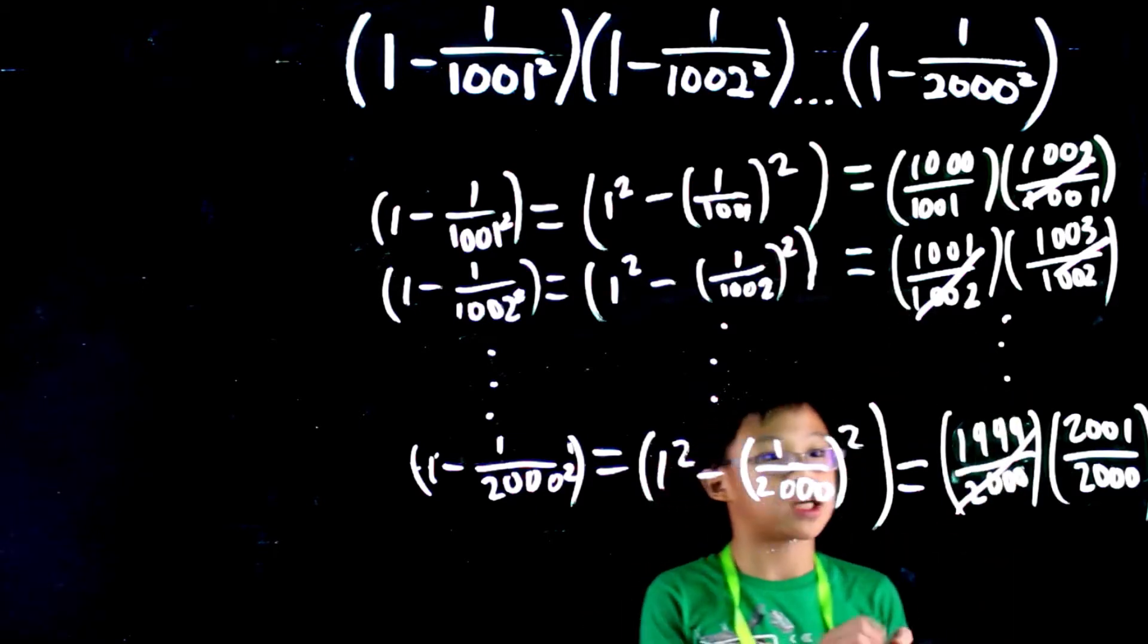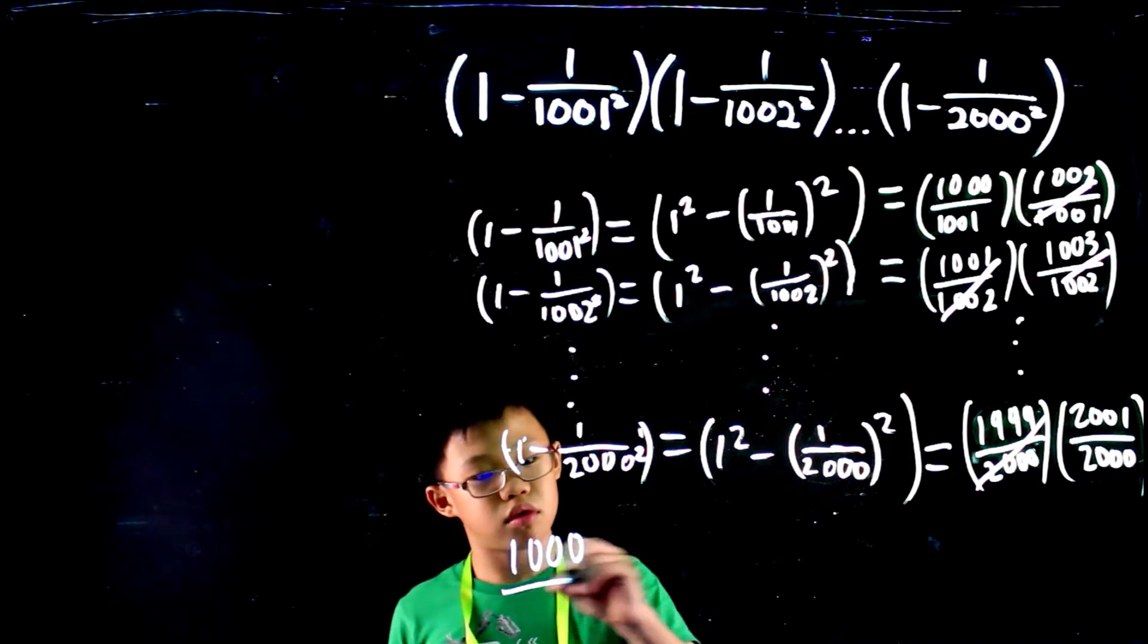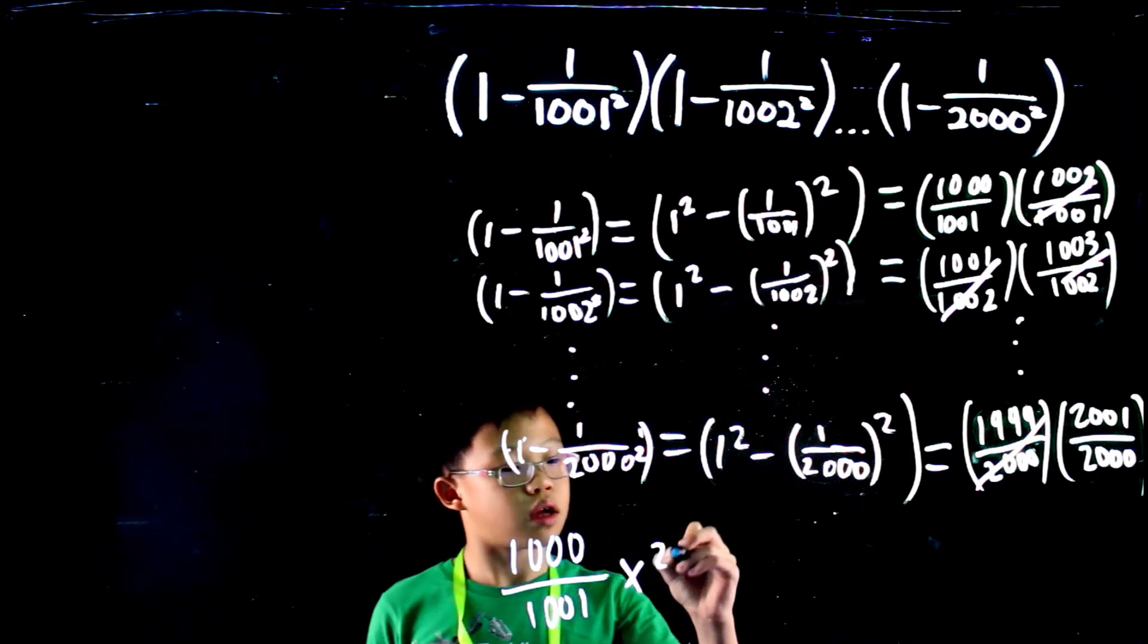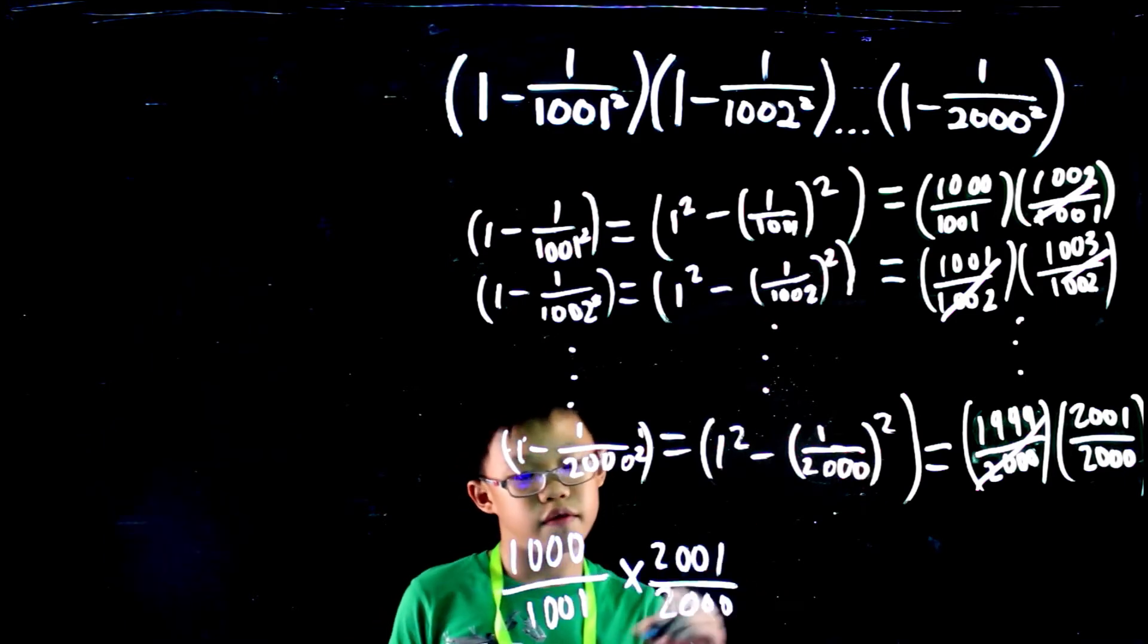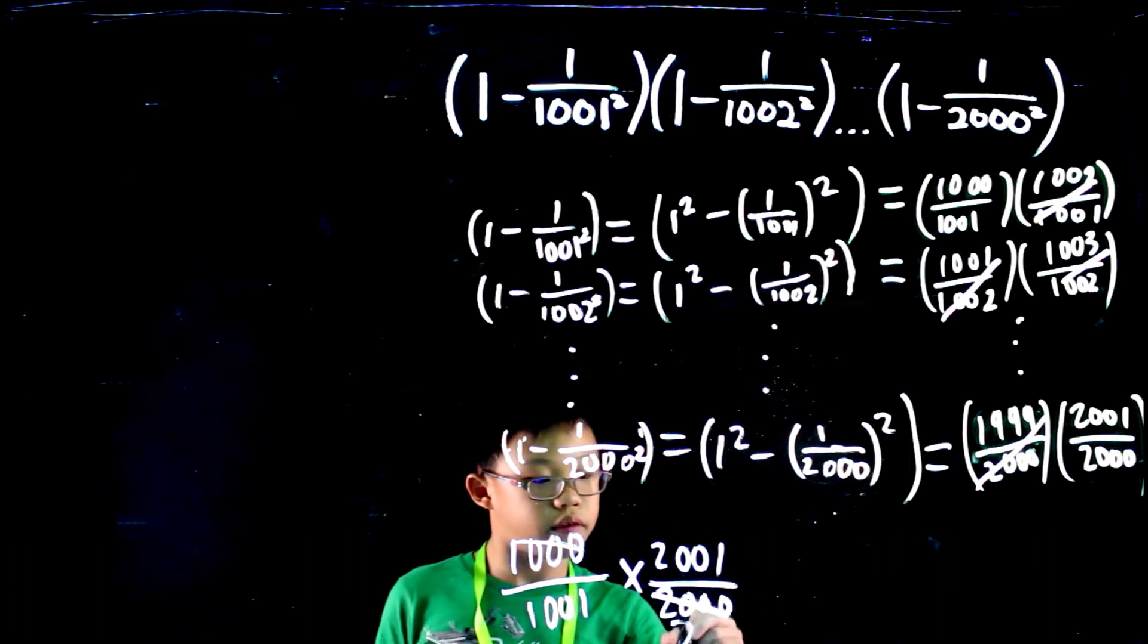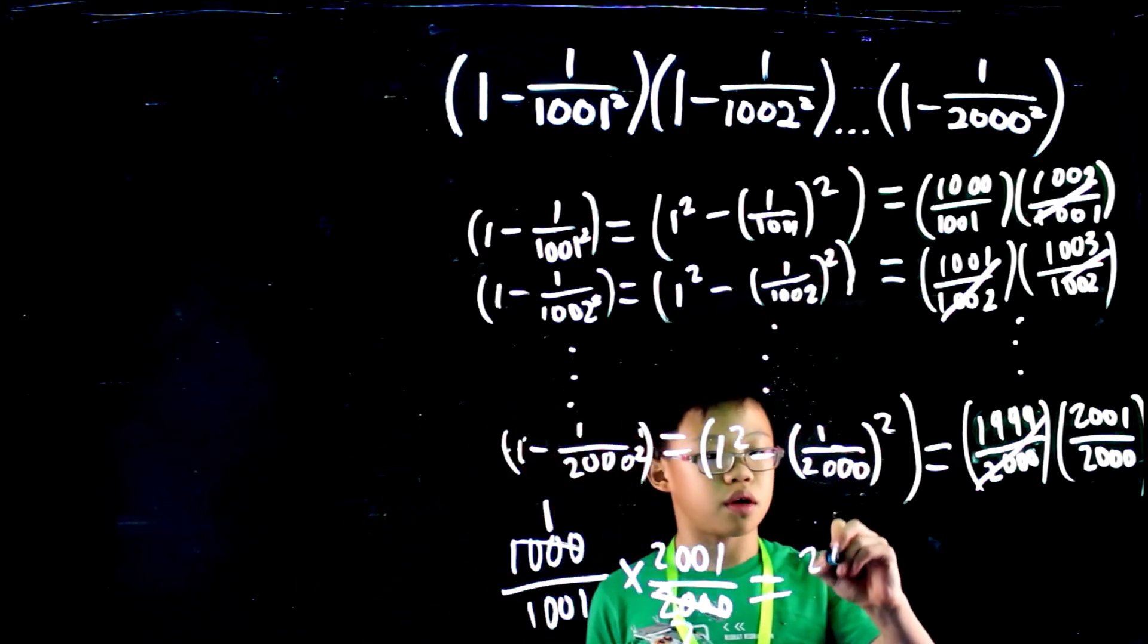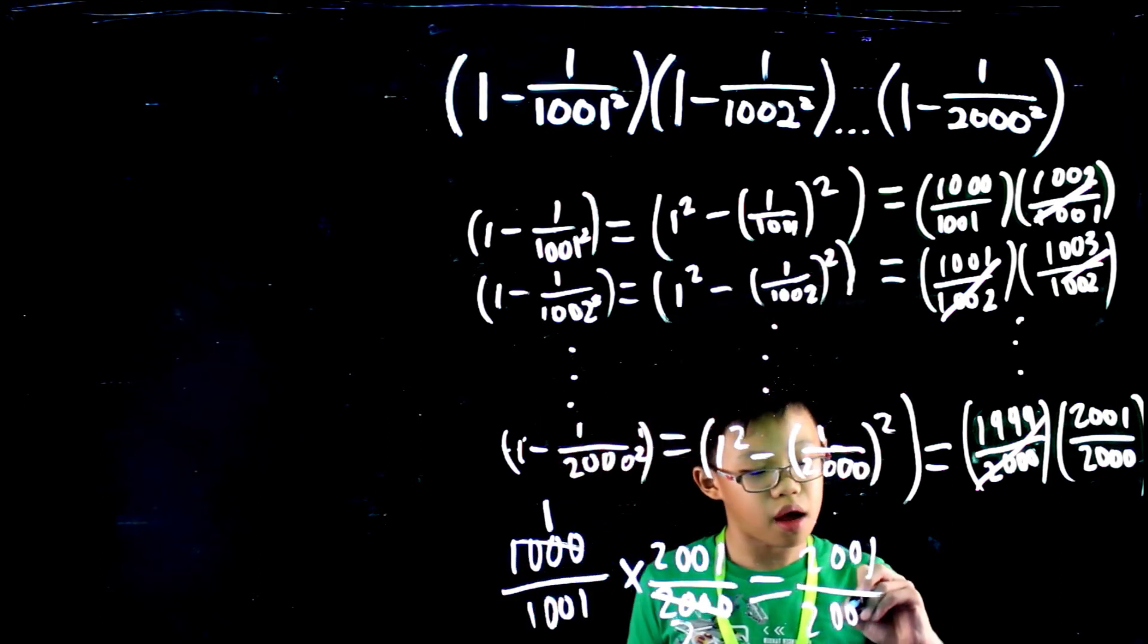So we are left with two fractions. That means now we are left with 1000 over 1001 multiplied by 2001 over 2000. First, we can cancel these out to give 2 and 1 which means this is 2001 over 1001 times 2 which is 2002.